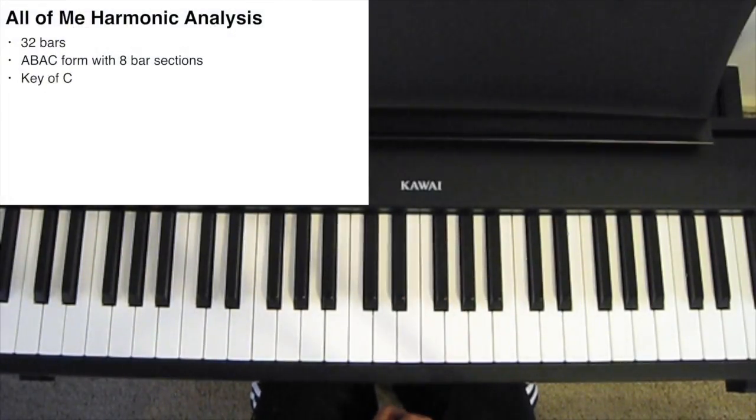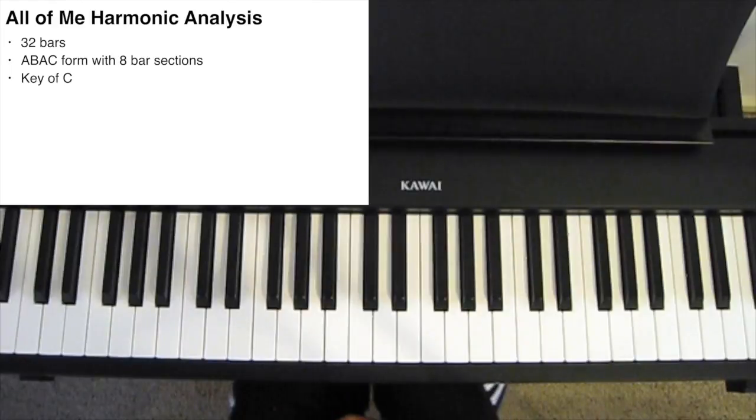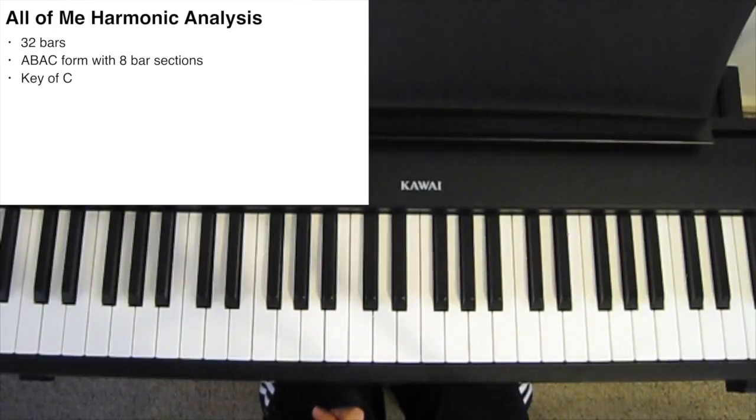Hi guys. I thought I'd do a quick harmonic analysis on the Jazz Standard All of Me. This is a standard 32 bar song with an A, B, A, C form, with standard 8 bar sections, all in the key of C.